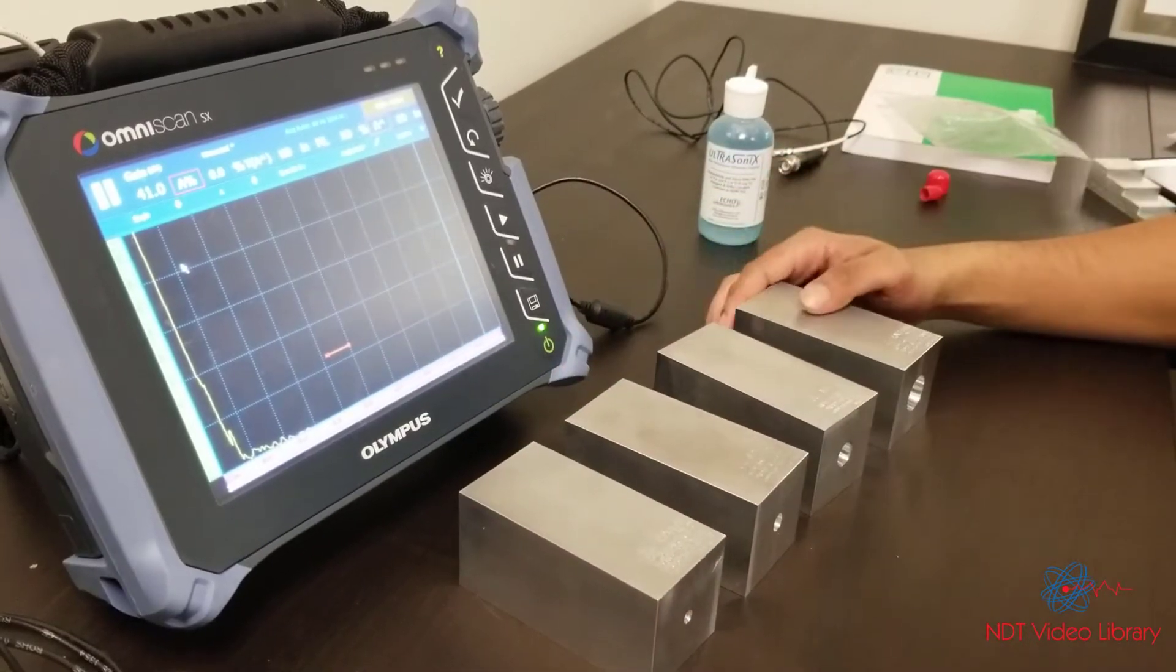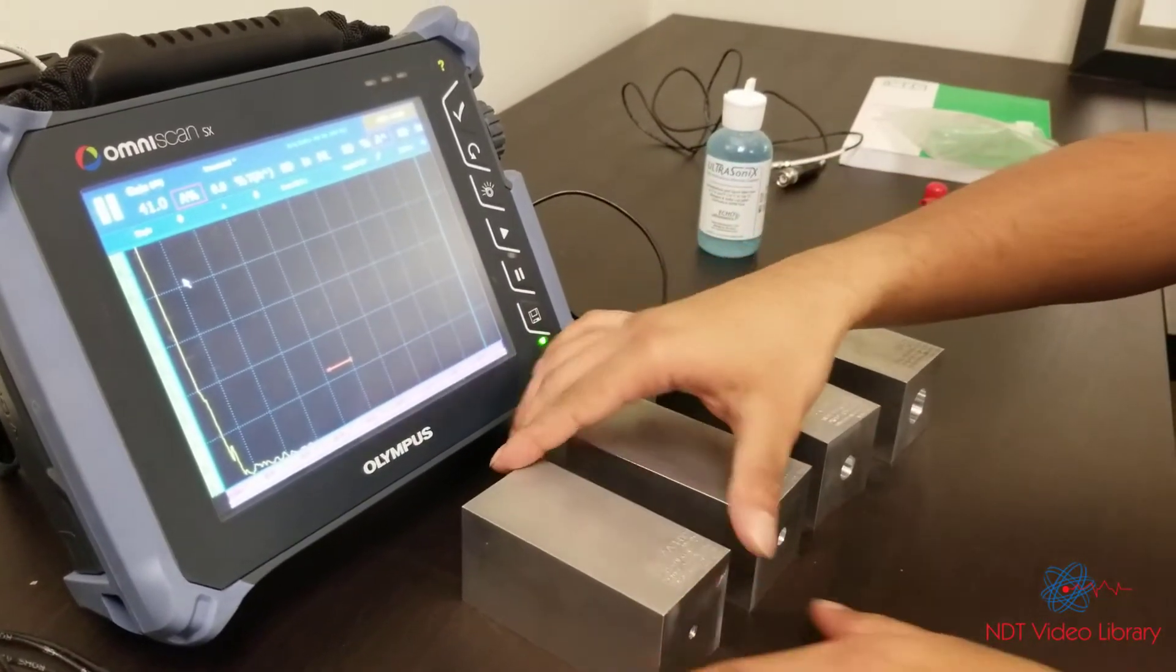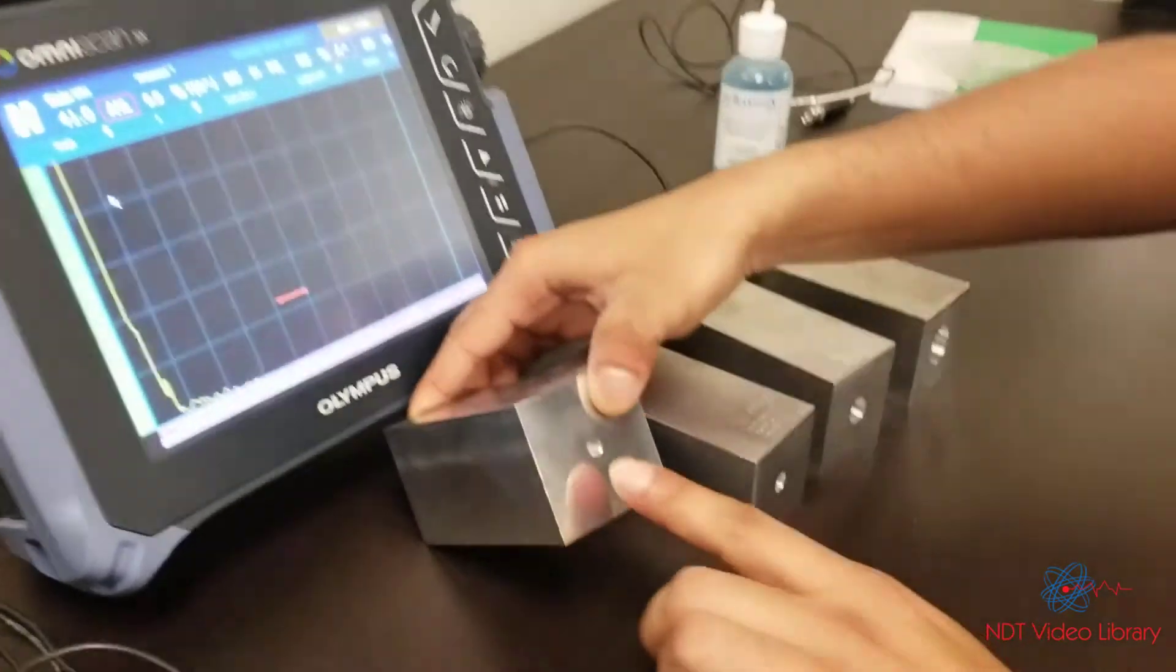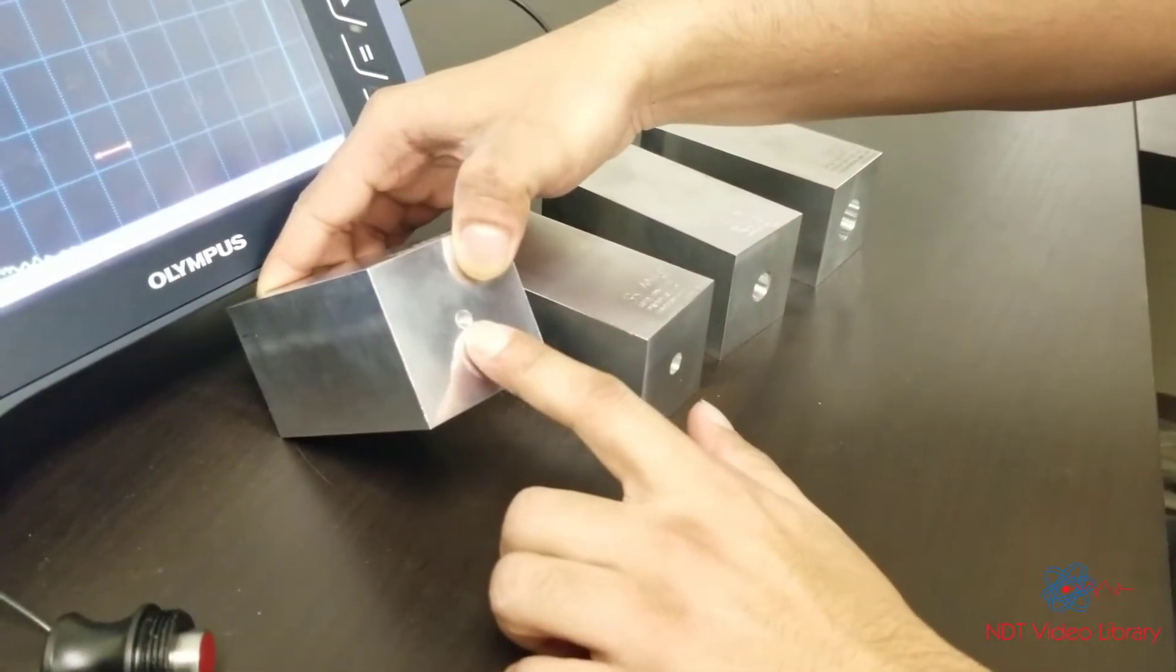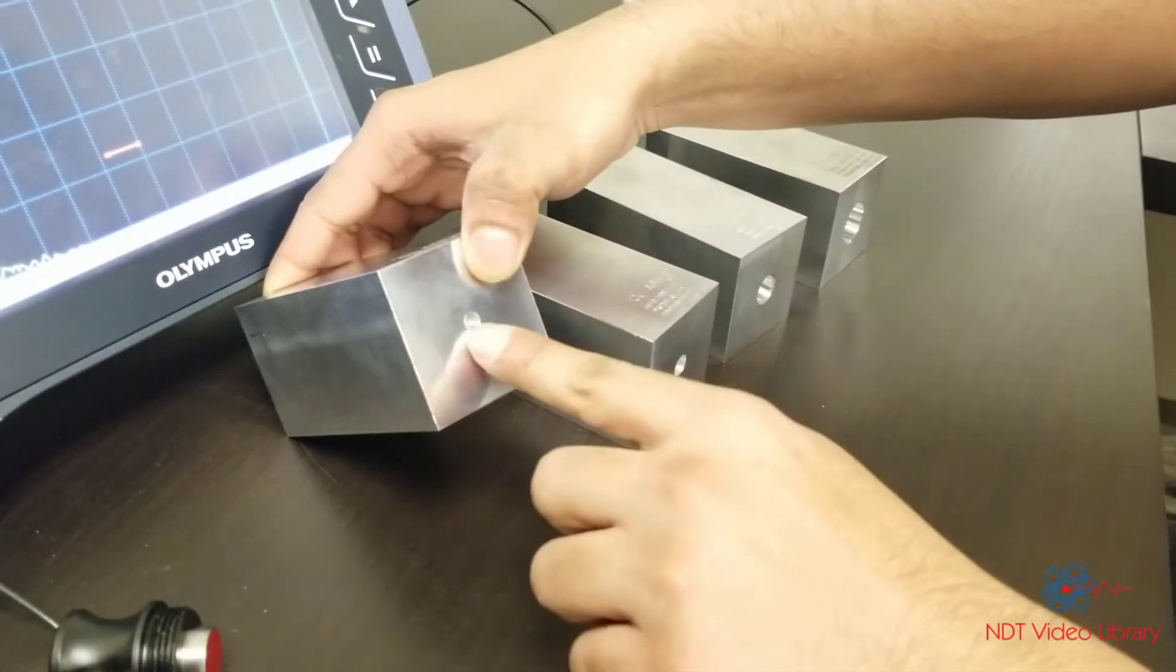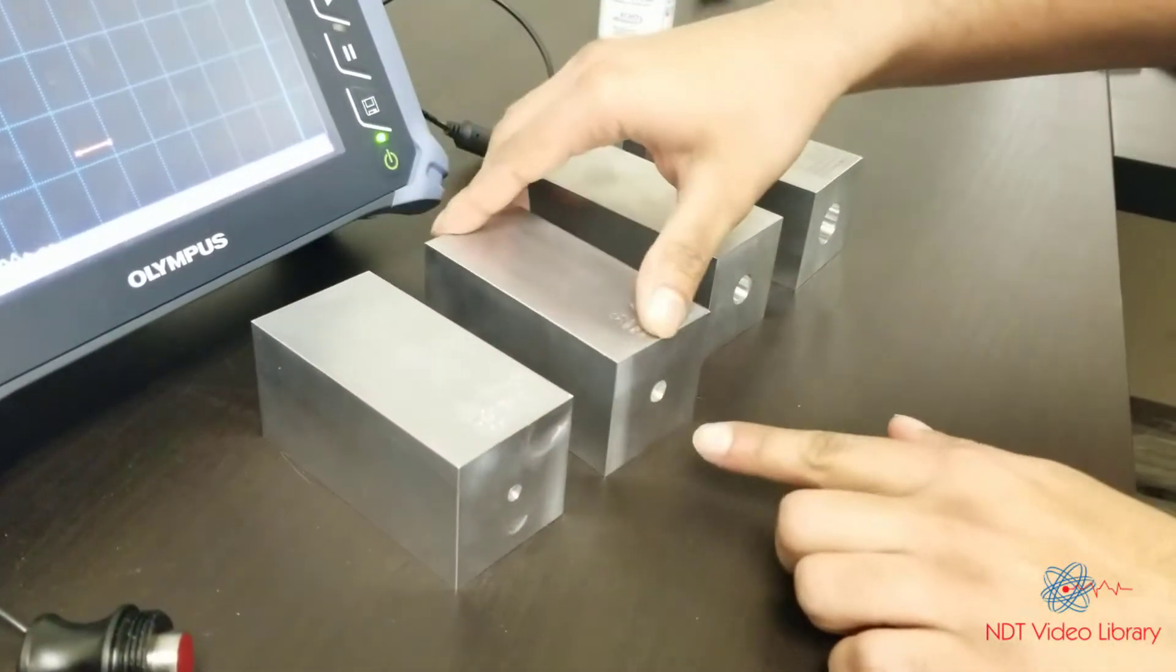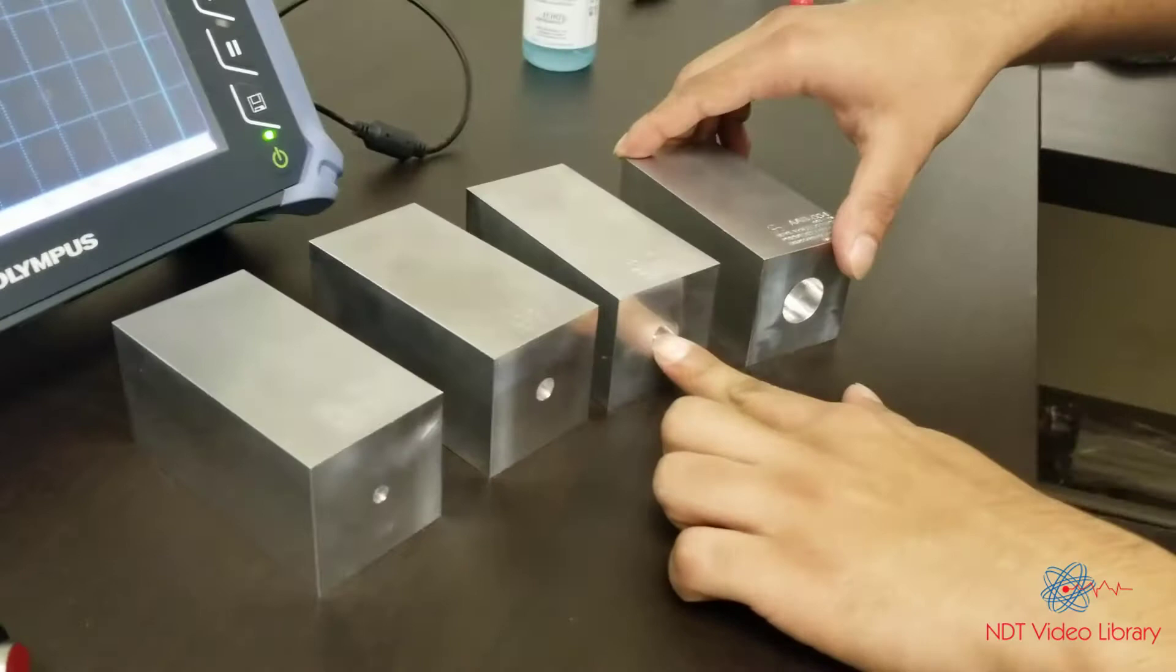Here I have four different blocks. They are area amplitude blocks, which means the area of the flat bottom hole varies. This is the flat bottom drilled hole. The area or the size or diameter of the hole keeps changing.